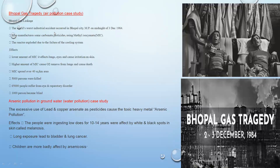The Bhopal gas tragedy is a very important air pollution case study. On 3 December 1984, in Bhopal, Madhya Pradesh, a factory using methyl isocyanate to produce carbonate pesticide experienced an explosion in its reactor, releasing methyl isocyanate gas into the air. The gas spread over a 40 square kilometer area, causing huge loss to the populated area. People suffered lung and eye irritation, and many people died. Around 5,000 people were killed in the Bhopal gas tragedy, 65,000 people suffered respiratory disorders, and thousands became blind.